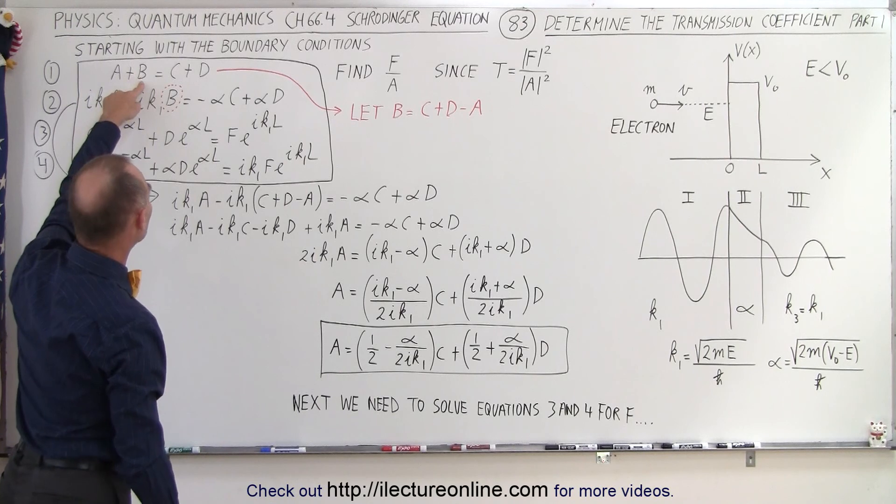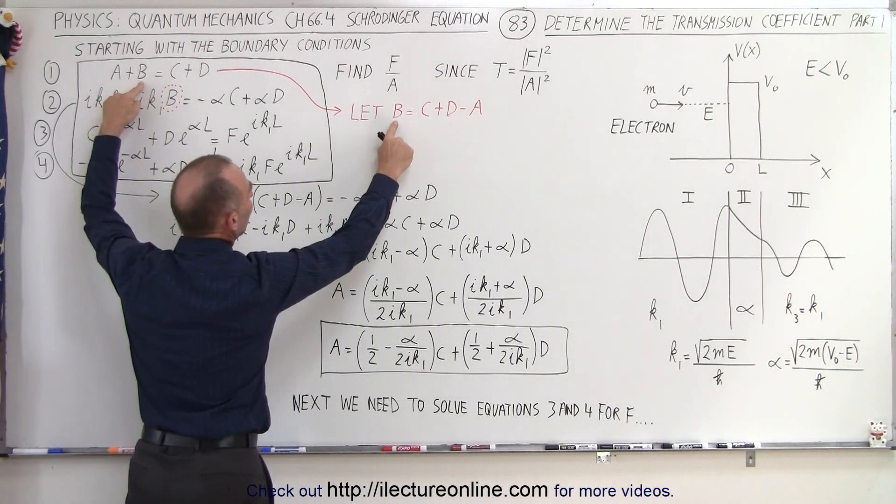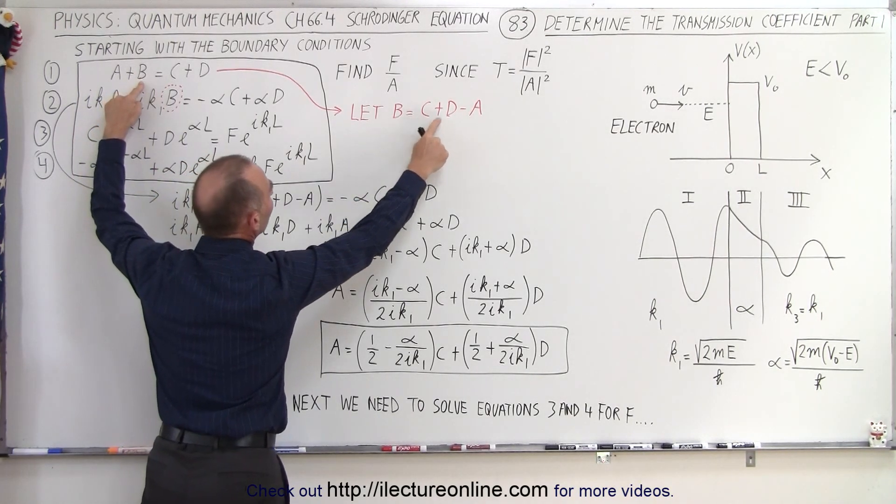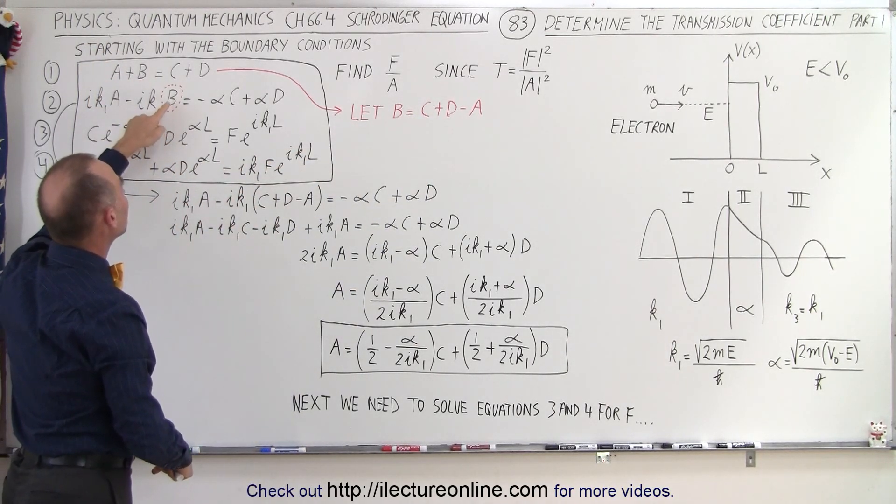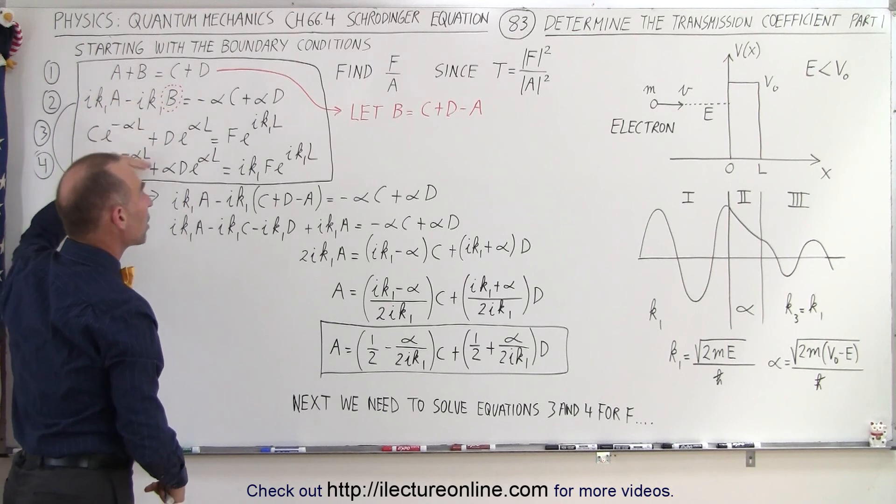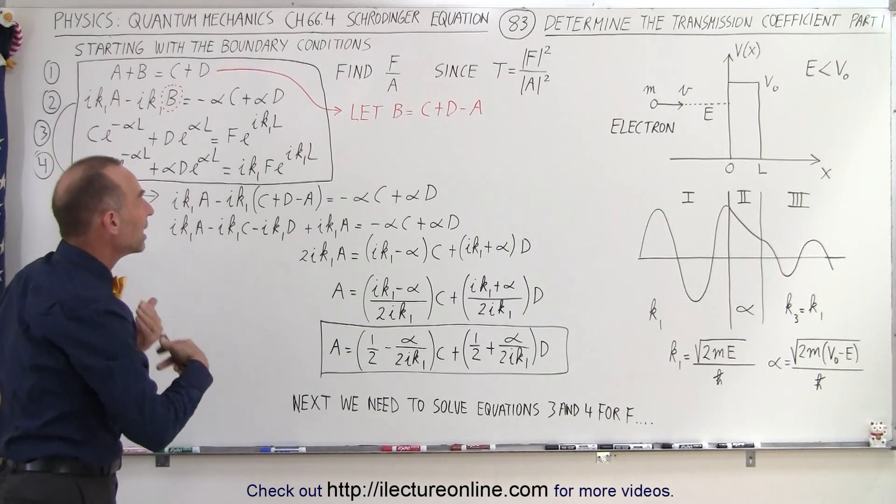We start that by taking the first equation and solving that equation for b. b is equal to c plus d minus a, and then we substitute that into the second equation, thus eliminating b from the next three equations. So that's our first step, eliminating b.